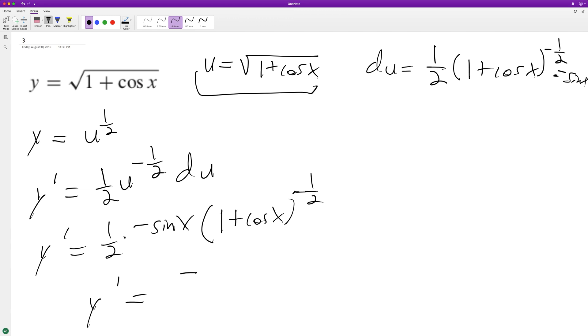We'll end up with negative sine x. We can put the 1/2, we can put the 2 down here, and then the 1 plus cosine x raised to the negative 1/2, we can just put this down here as a square root, or just 1 plus cosine x raised to the 1/2. And that's it.